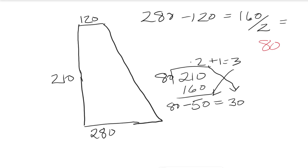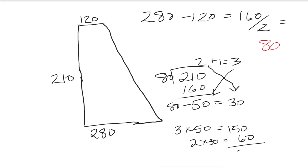We can also check that we have 210 rows by taking 3 times 50, which is 150, and 2 times 30, which is 60, and adding those together to get 210. So we work every third round 50 times and every second round 30 times.